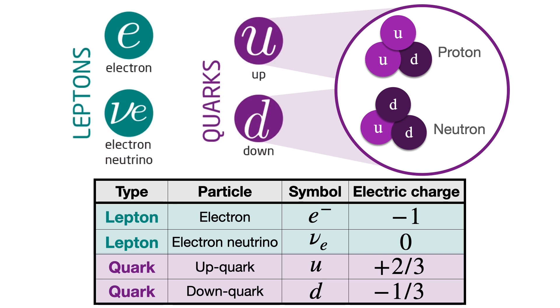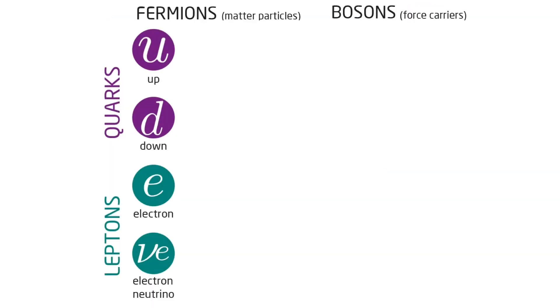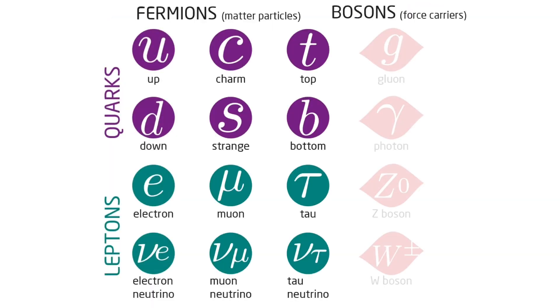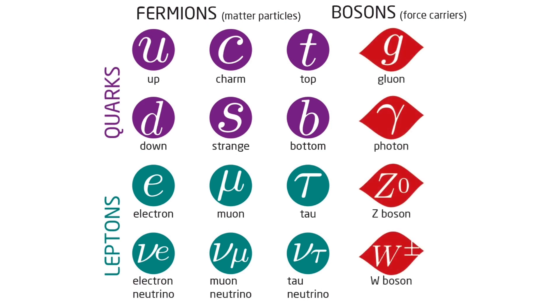A fun fact is that nature replicates itself, and there are in fact three generations of quarks and leptons. These higher generations undergo identical interactions. Their only difference is that the mass of the particles and generations are successively heavier.